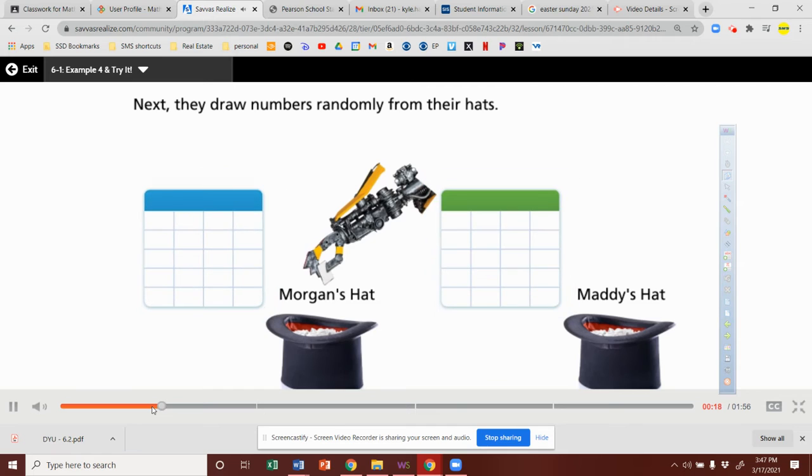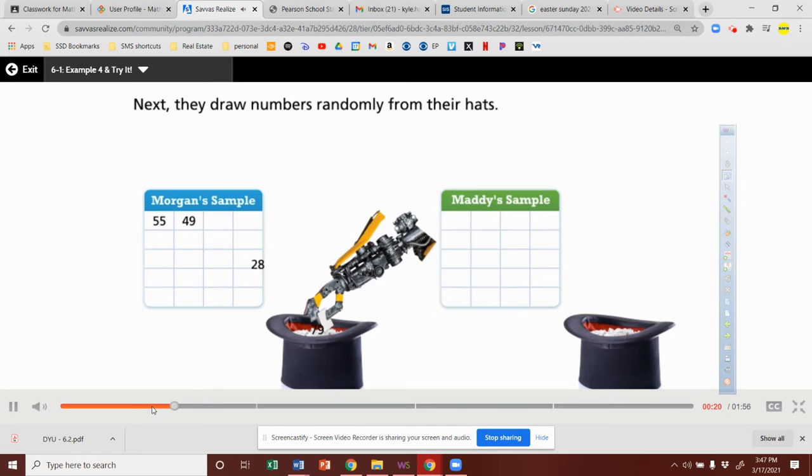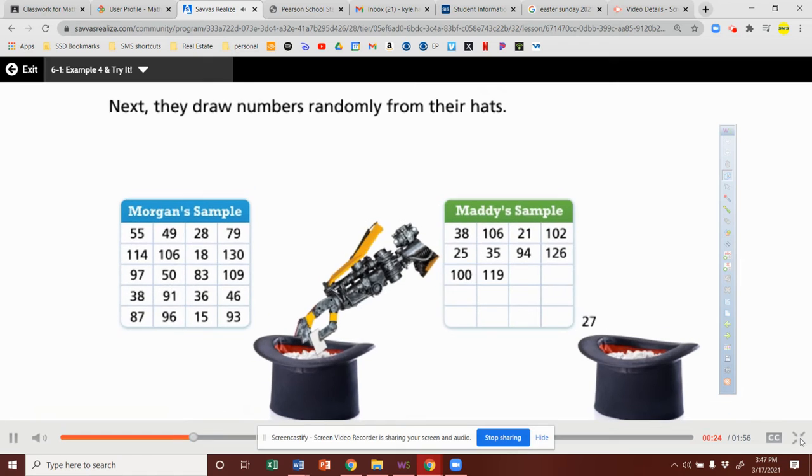Next, they draw numbers randomly from their hats. Here are the numbers that Morgan drew, and here are the numbers that Maddie drew.